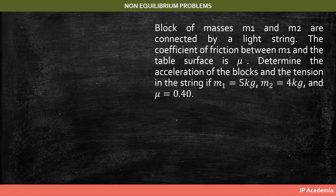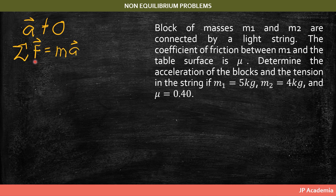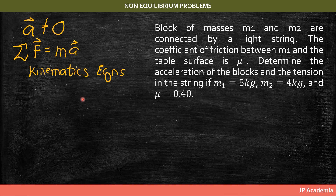Next, applying dynamics to a non-equilibrium problem where acceleration is not zero. We use Newton's second law and kinematics equations. Problem: blocks of masses M1 and M2 are connected by a light string; the coefficient of friction between M1 and the table surface is mu. Given M1 equals 5 kg, M2 equals 4 kg, and mu equals 0.40, determine the acceleration of the blocks and the tension in the string.